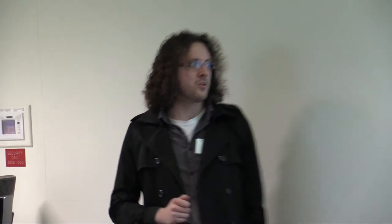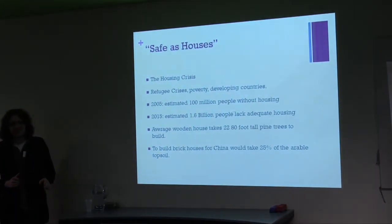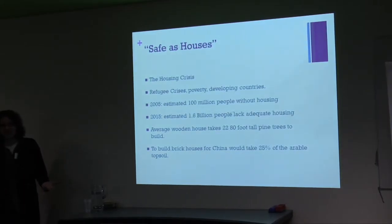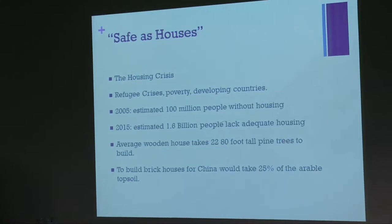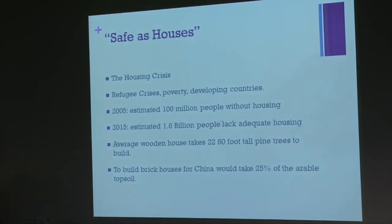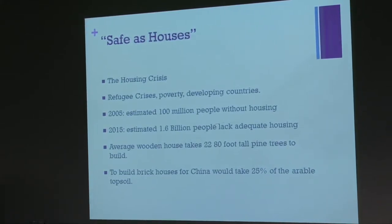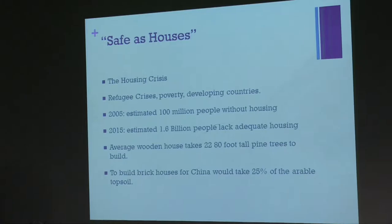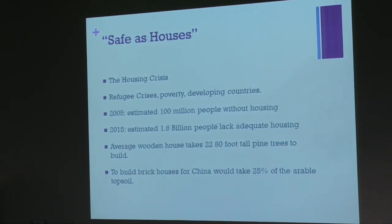So, housing. There are lots of people who lack houses. In 2005, there were 100 million people who didn't even have houses, which has actually gone up as natural disasters, wars, and displacement due to refugee crisis. Now, to actually make a house takes a lot of energy. To make the average American wooden house takes 22 80-foot tall pine trees. That's a lot of plantation wood, and when you harvest plantation wood you risk landslip and other things. And to build brick houses for all of the currently homeless rural people living in rural China, you'd have to harvest 25% of all of the arable topsoil in the country.